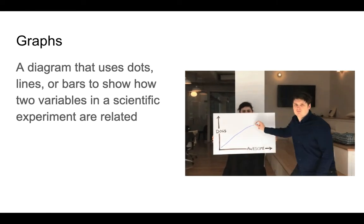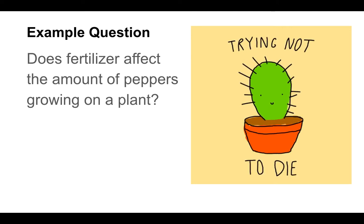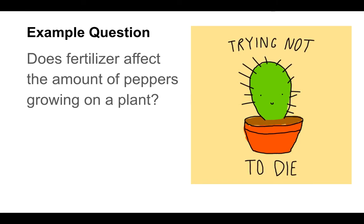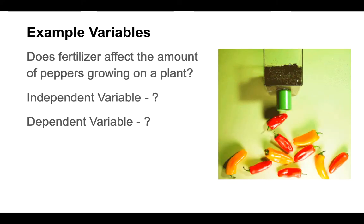So in this case, we have dogs and awesomeness. Let's take a look at an example question and go through the process we need to follow in order to set up our data table and graph. For this question, we're going to ask: does fertilizer affect the amount of peppers growing on a plant? I just realized that this little picture here is a plant, but there's no peppers — that's kind of sad.